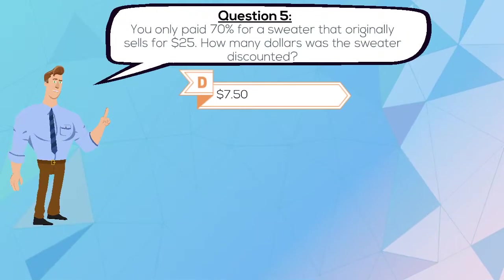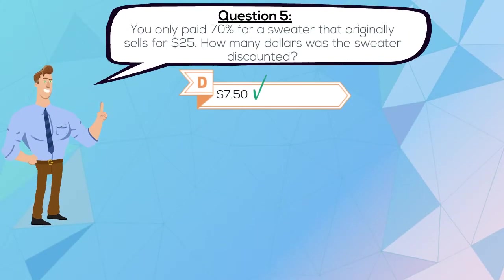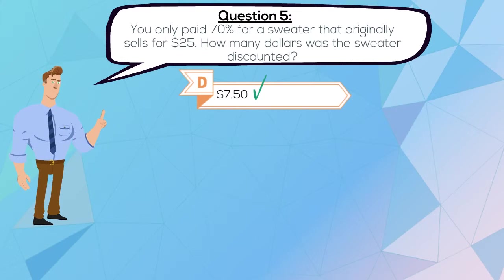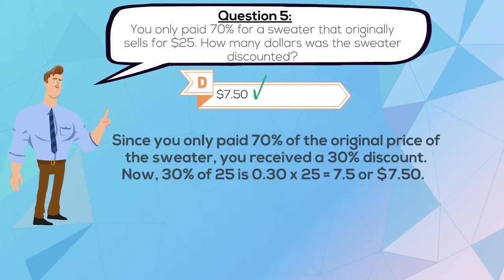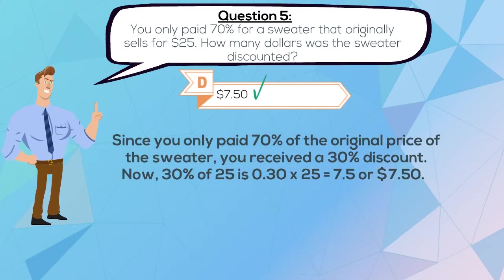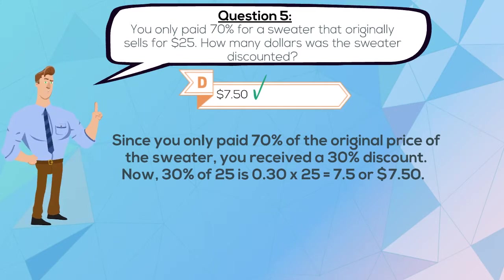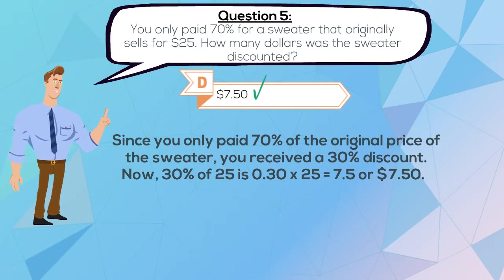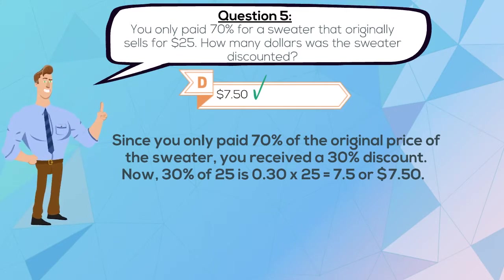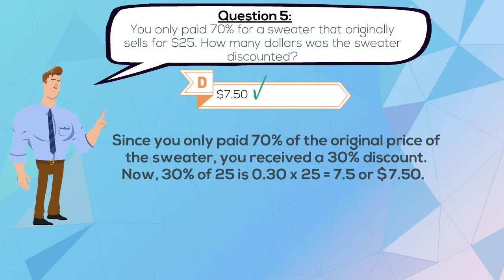The correct answer is D, $7.50. Since you only paid 70% of the original price of the sweater, you received a 30% discount. Now, 30% of 25 is 0.30 times 25, which equals 7.5 or $7.50.